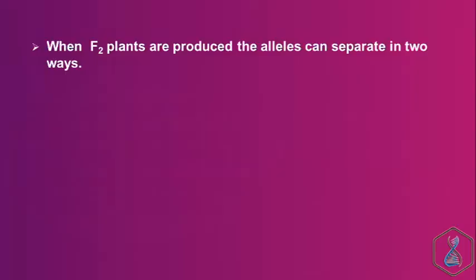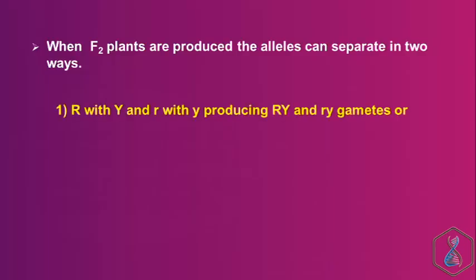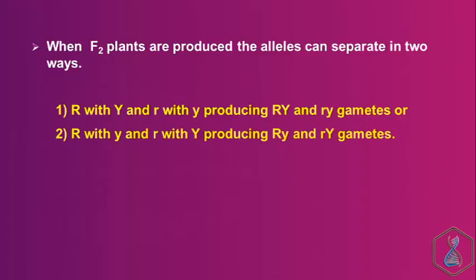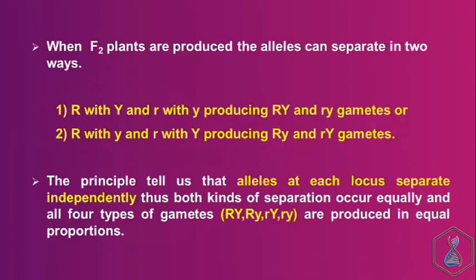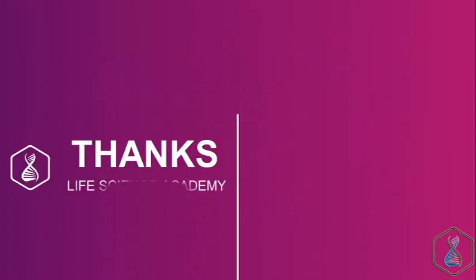In independent assortment, we consider two loci and look at how alleles separate during gamete formation. Genes on different chromosomes behave independently — for example, seed shape and seed color on different chromosomes behave independently during gamete production. When F2 plants are produced, alleles can separate in two ways: capital R with capital Y and small r with small y, producing gametes RY and ry; or capital R with small y and small r with capital Y. All four gamete types — RY, ry, Ry, and rY — are produced in equal proportions.